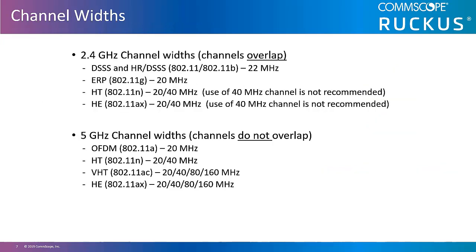Regarding channel width in 2.4 gigahertz: devices using Direct Sequence Spread Spectrum have 22 megahertz wide channels, while devices using Orthogonal Frequency Division Multiplexing use 20 megahertz wide channels. The OFDM and ERP channels in 2.4 gigahertz can be bonded to make 40 megahertz wide channels. However, since there are only three non-overlapping channels at most in 2.4 gigahertz, you should never use channel bonding in this space in any high-density or enterprise environment.